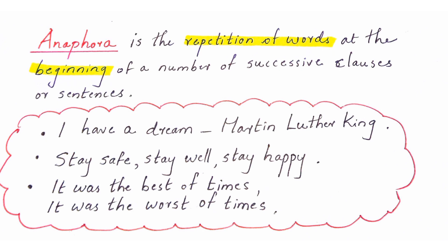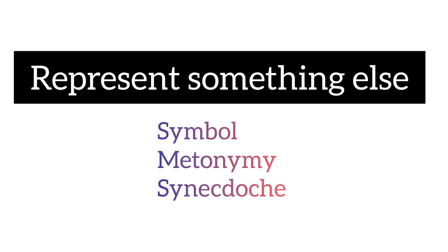One important thing to remember: this is called anaphora only if the repeated word comes at the beginning. Refrain is also a repetition of words, but it can come wherever the poet pleases — it doesn't matter whether it is at the beginning or at the end. If words are repeated and they appear at the beginning of the sentence, it is anaphora.